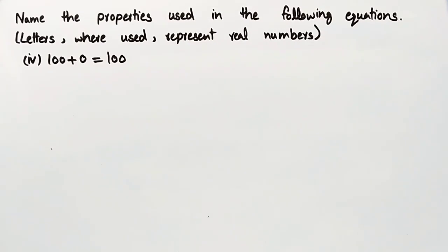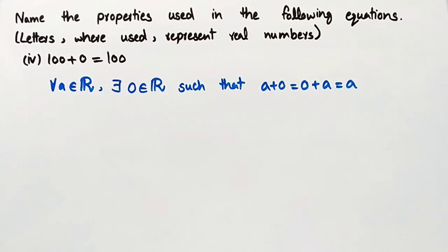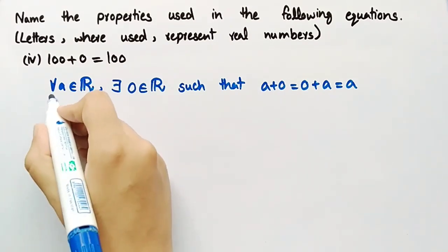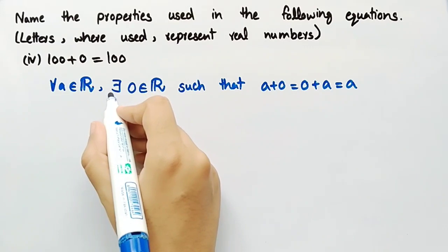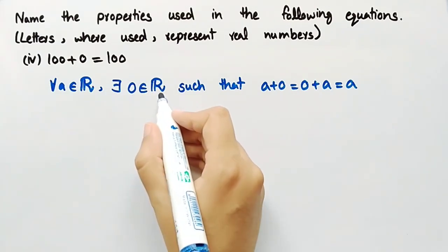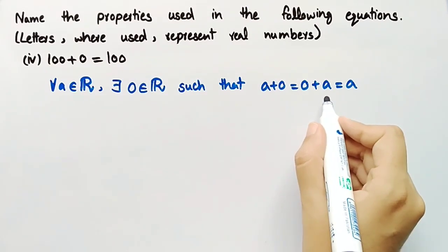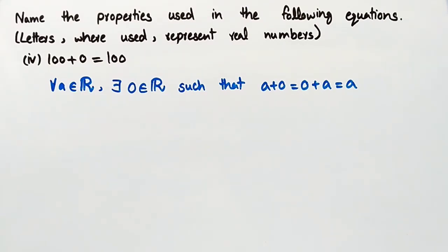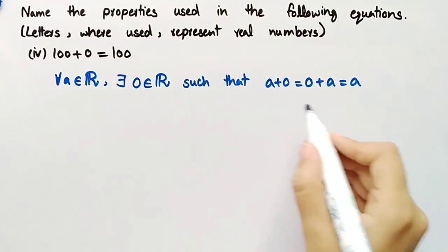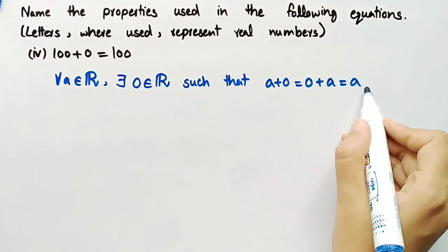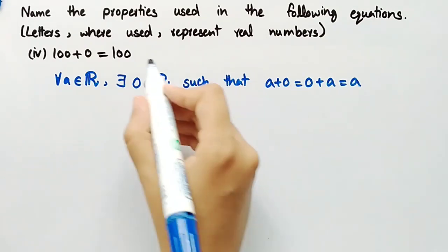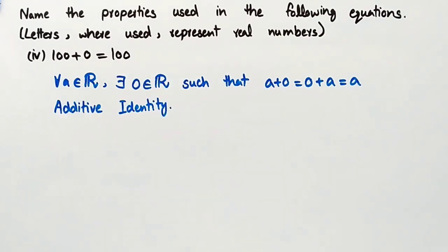The fourth equation is 100 plus 0 is equal to 100. By the law of additive identity, for all A belonging to the set of real numbers, there exists 0 in the set of real numbers such that A plus 0 is equal to 0 plus A, which equals A. The property used in this equation is the property of additive identity.